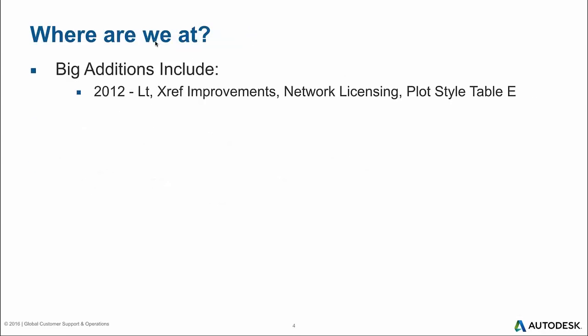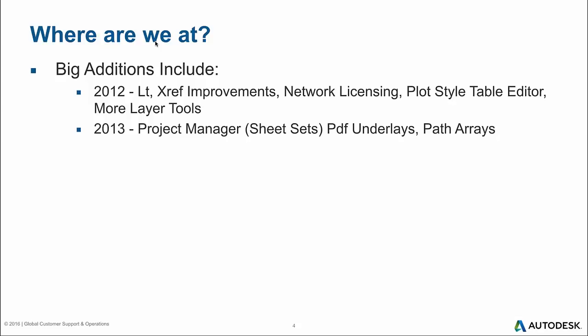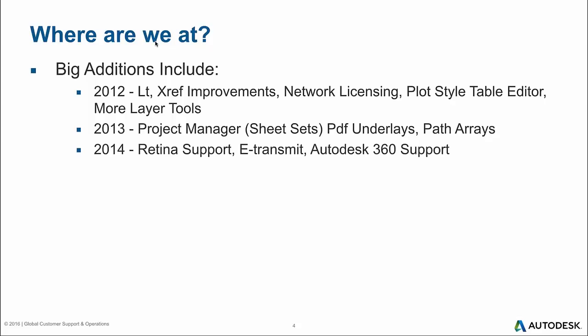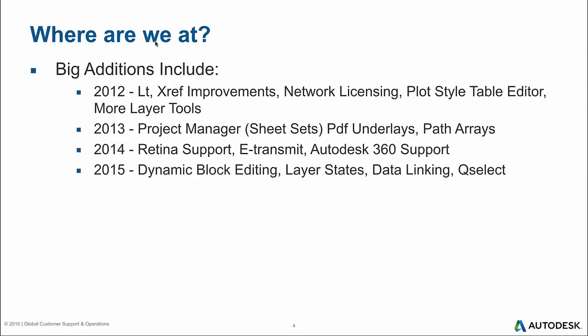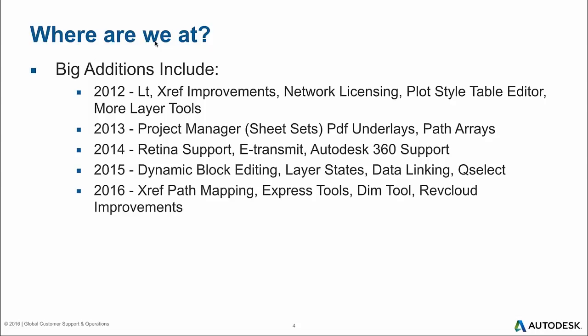In 2010 Autodesk announced AutoCAD for Mac — the first Mac-native release in 17 years, completely rewritten from the ground up to take advantage of the Mac operating system and Cocoa. In 2012 they added AutoCAD LT for Mac with improvements to XRefs, network licensing, and the plot style table editor. 2013 brought the project manager for sheet sets, PDF underlays, and path arrays. 2014 added retina support for 4K/5K icons, e-transmit, and Autodesk 360. 2015 brought dynamic block editing, layer states, data linking, and quick select. 2016 added XRef path mapping, express tools, and the DIM tool.